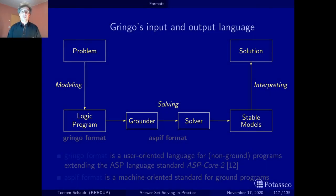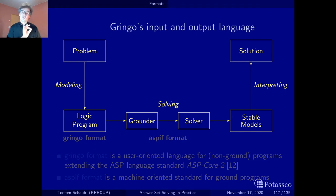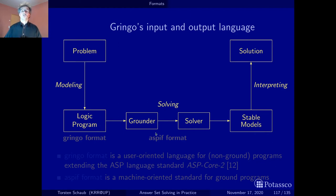So I trust you remember ASP's workflow — here it is again. We start with a problem, think hard about it, figure out the constraints, and express them in form of a logic program. Then this logic program is passed to an ASP system — in our case Clingo — which first removes all the variables in your logic program. Once you remove all variables you obtain a variable-free or ground program. Then the solver takes this program, computes all of its stable models, and they are printed back to you so you have the solution to your problem.